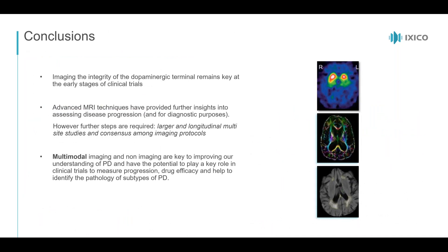In conclusion, imaging the integrity of the dopaminergic terminal remains key from a diagnostic perspective and at early stages of clinical trials. Advanced MRI techniques are providing interesting insights for assessing disease progression and for diagnostic purposes. What we really need next are larger, longer, multi-site studies and more consensus among imaging protocols, as various sequences can be used and standardization is needed to accurately compare results. Most importantly, multimodal imaging and non-imaging biomarkers are really key to improving our understanding of Parkinson's disease, with the potential to measure progression, drug efficacy, and identify pathology in subtypes of PD.